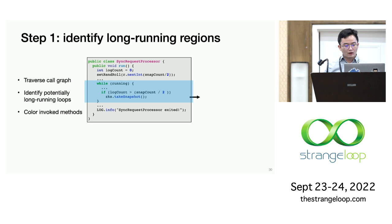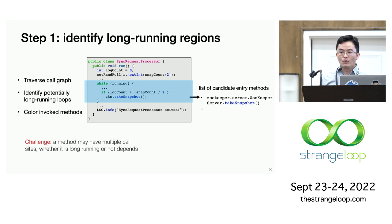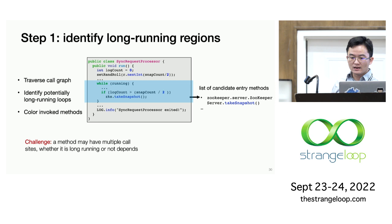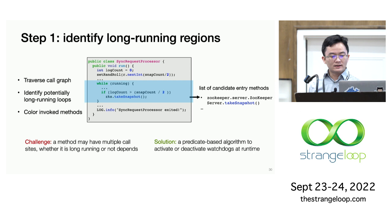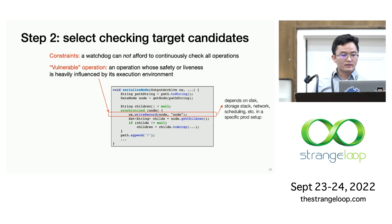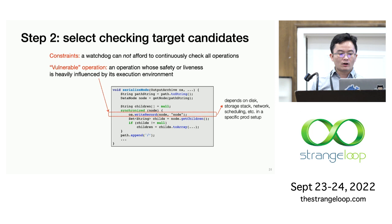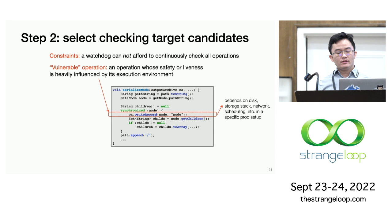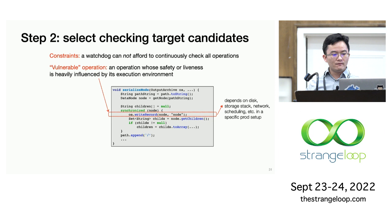One challenge here is that a method may have multiple call sites, and only some of the call sites will make this method long-running at runtime. To address this, we use a predicate-based algorithm that can activate and deactivate the watchdogs based on the call-site predicates. Once we select a list of entry methods to reduce, the tool next tries to select checking target candidates. This selection step is necessary because a watchdog cannot really afford to check all operations at runtime.